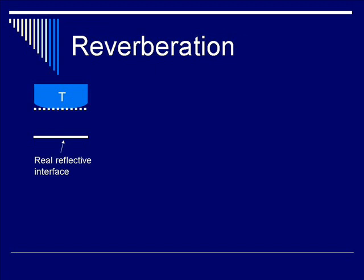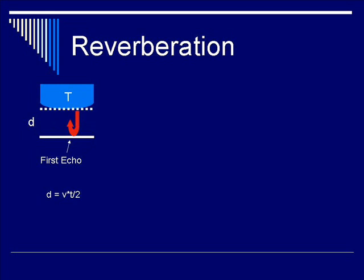How does this work? Looking at the illustration, you have a transducer labeled T with the surface marked by a dotted line. Ultrasound waves emanate as pulses from the machine towards a highly reflective surface or interface, which reflects the ultrasound wave back towards the transducer. This reflective echo gives you the signal to form the image on the ultrasound screen. The red arrow denotes the signal returning from the interface — the first echo and the real image — at distance d from the transducer surface, calculated by the equation: velocity times time divided by 2.